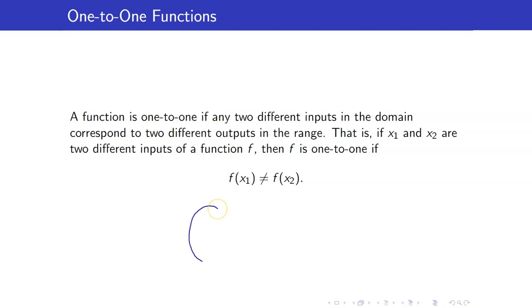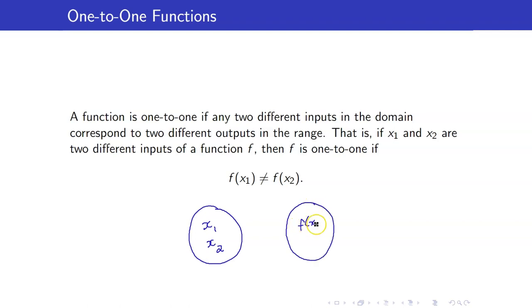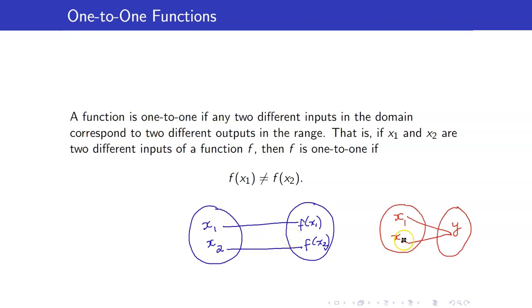That is, if I have two different inputs x1 and x2, then their images should not be the same. So x1 will go to f(x1) and x2 will go to f(x2). In other words, no y in the range is the image of more than one x in the domain.